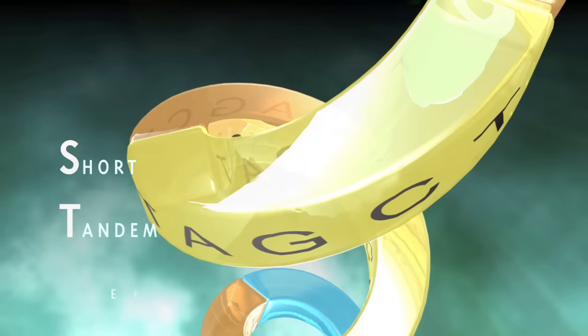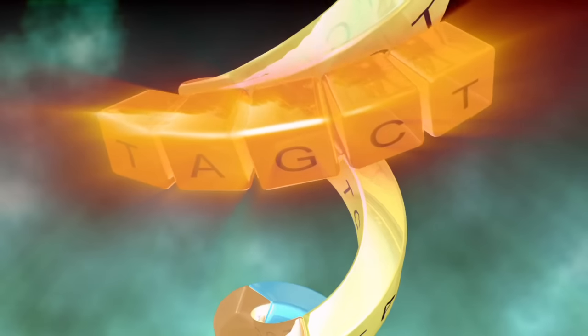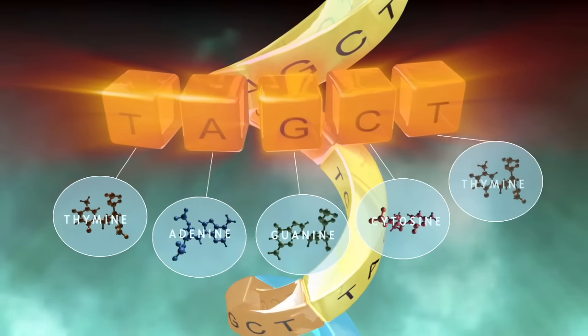A short tandem repeat, or STR, is a region of DNA composed of a short sequence of nucleotides repeated many times.